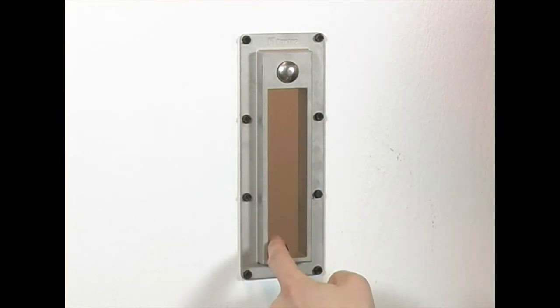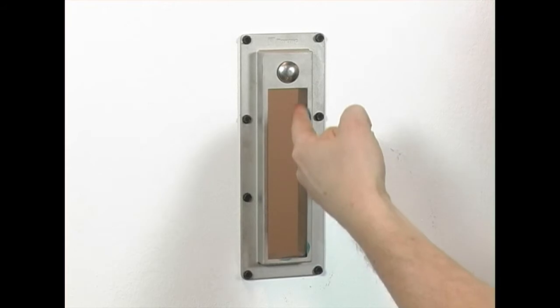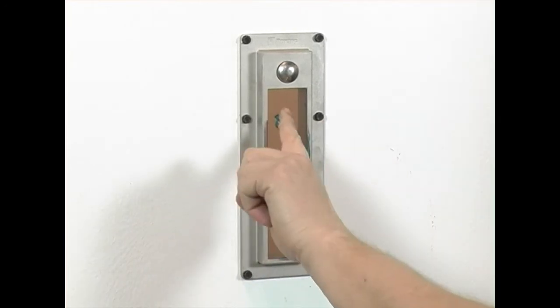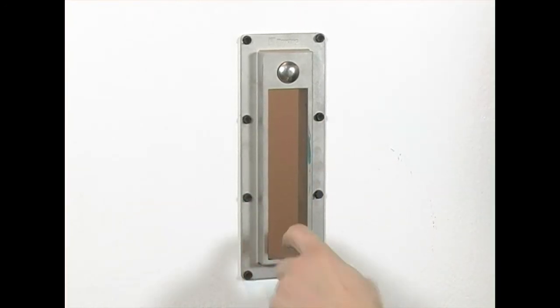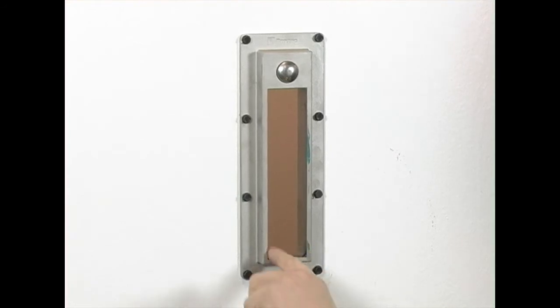Lubricate the inside of the frame with Roxtec assembly gel. Do not lubricate where the foil is to be situated, 15mm on the back side of the frame. Make sure that you lubricate the corners.